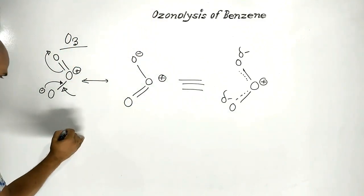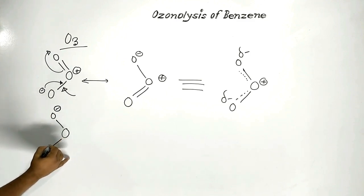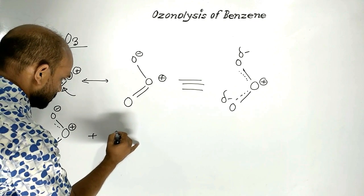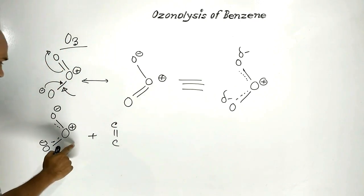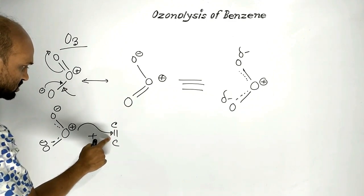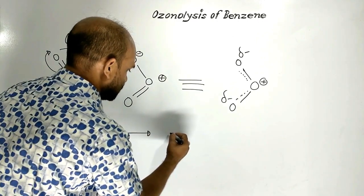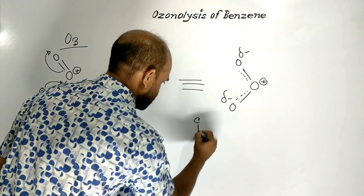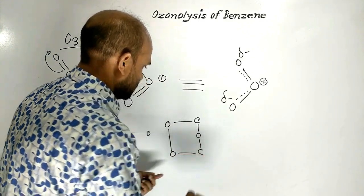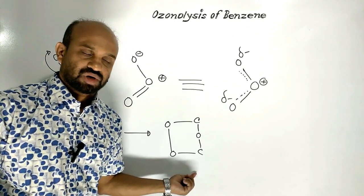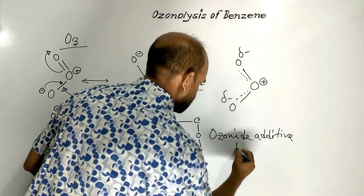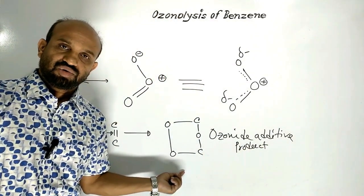Now let us see how ozone attacks an unsaturated hydrocarbon. Suppose this is an unsaturated hydrocarbon with a carbon-carbon double bond — an electronically dense place. This oxygen attacks this carbon-carbon double bond and as a result an ozonoid additive product is formed: carbon, then oxygen at the middle, then oxygen, then carbon, with carbon-oxygen bonds on each side. This is the ozonoid additive product.